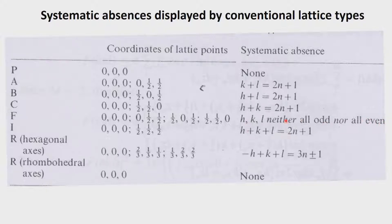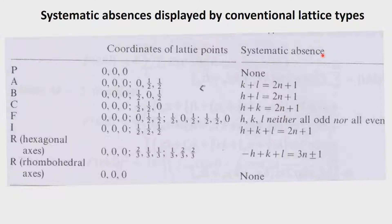For the face-centered lattice, which we discussed with the example of zinc sulfide, HKL must be neither all odd nor all even — meaning all three conditions must be simultaneously satisfied for a reflection to be systematically absent. What is listed in the international tables are not the systematic absences but the systematic presences, something which we should remember when we look at the international tables for reference.